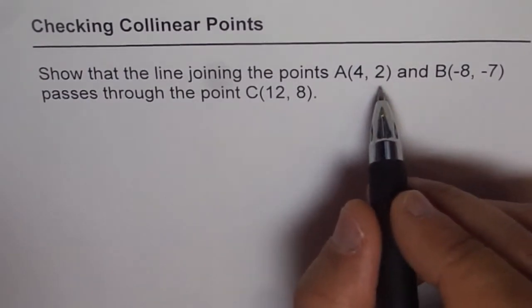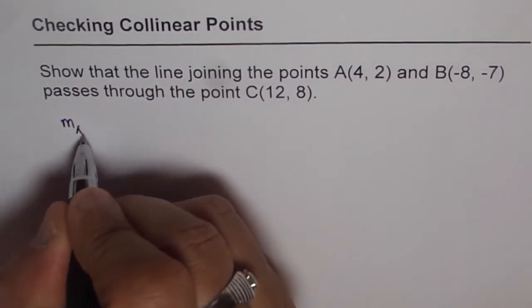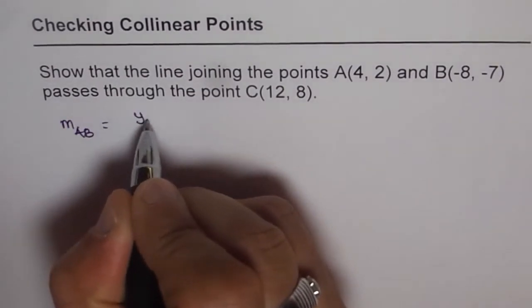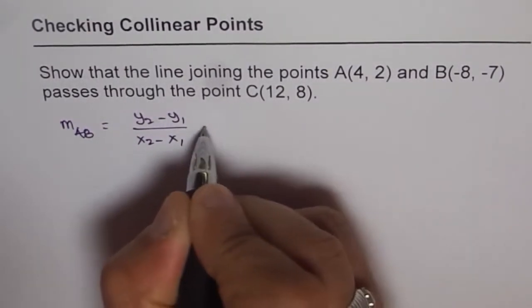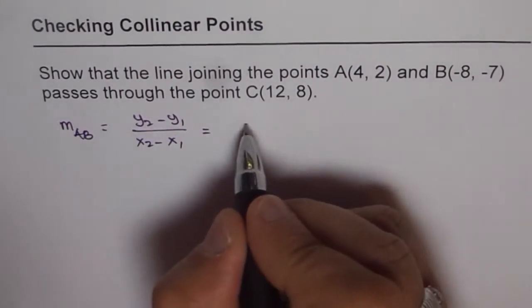For that, we need slope and a point. So the slope between A and B is y2 minus y1 over x2 minus x1. Now here, y2 is -7...